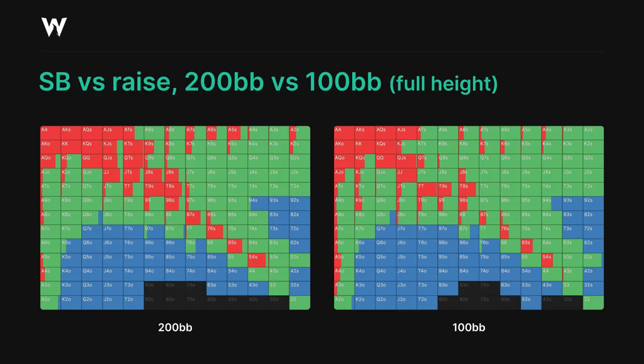The suited connectors are providing the coverage, while the offsuit aces provide the blocking power. It's notable also that the pocket pairs don't function well as limp 3-bets — even pocket 9s and pocket 8s are mostly just limp calling. It's also notable that the small blind is limp calling some hands as weak as jack-deuce suited or king-7 offsuit. These might seem way too weak to call a large raise, but the big blind's raising range is very wide and very polarized, so the small blind has more equity with these hands than it might seem like they do.